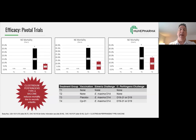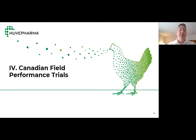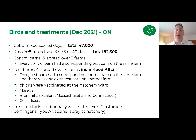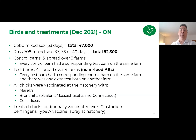Now let's look at performance. The first field study was done in Southern Ontario in December 2021 — a challenging time of year with potential temperature stress and tighter barns creating more moisture. This used Ross 708 mixed sex birds marketed at different ages. The producer had three different farm locations with two barns on each site, giving three control barns and three test barns. Interestingly, they added a fourth farm location with no in-feed antibiotics.